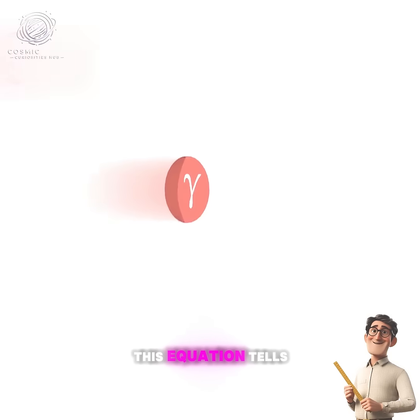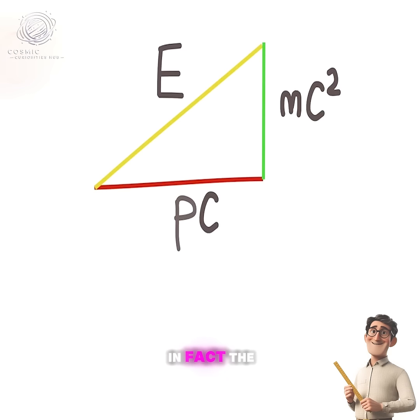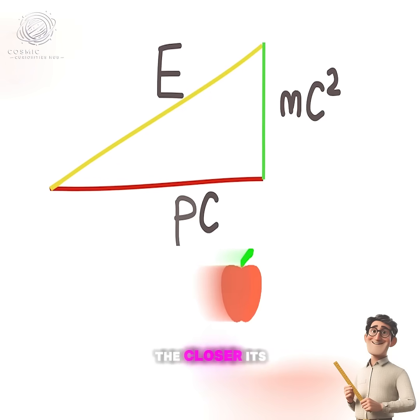This equation tells us the energy possessed by massless particles is equal to momentum times the speed of light. In fact, the closer an object's energy is to pc, the closer its speed is to the speed of light.